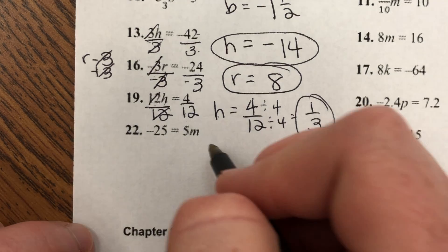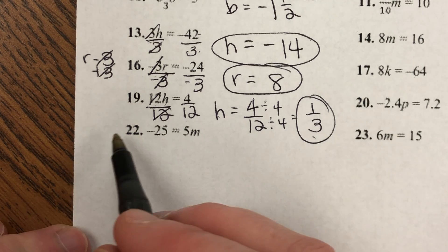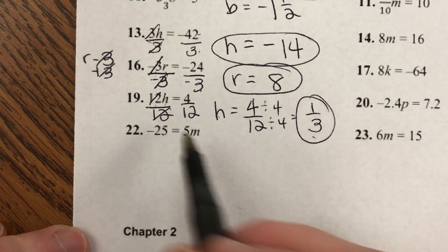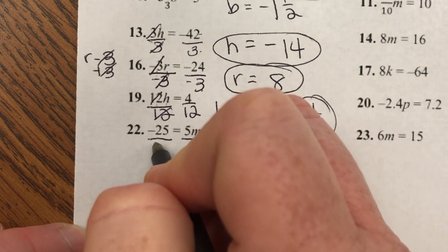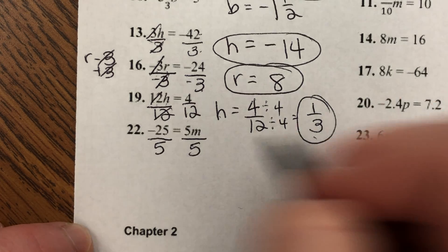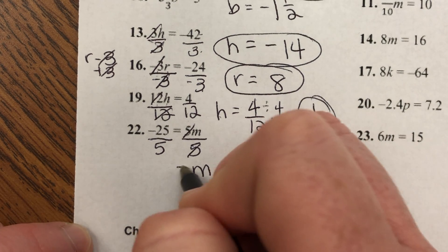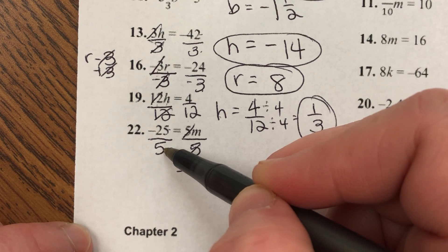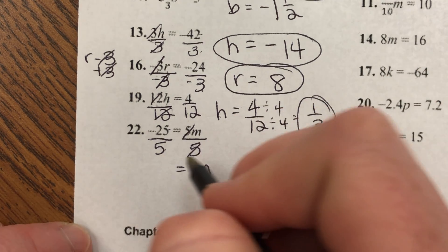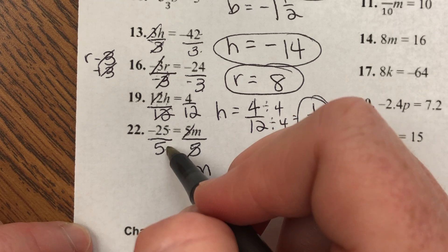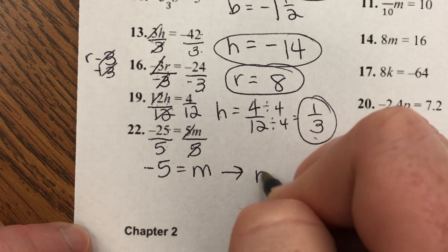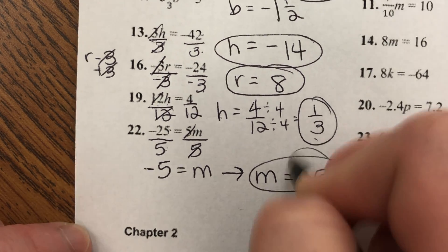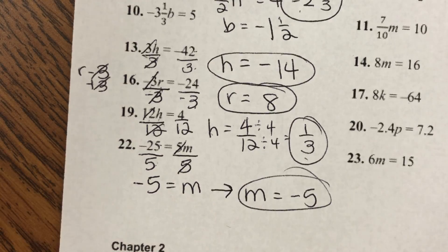Number 22: 5 times N equals negative 25. I want to get N by itself. To get rid of times 5, I divide by 5 on both sides. These fives cancel. N equals negative 25 divided by 5, which is negative 5. Rewrite with the variable first: N equals negative 5. Let me know if you have questions and good luck on the assignment.